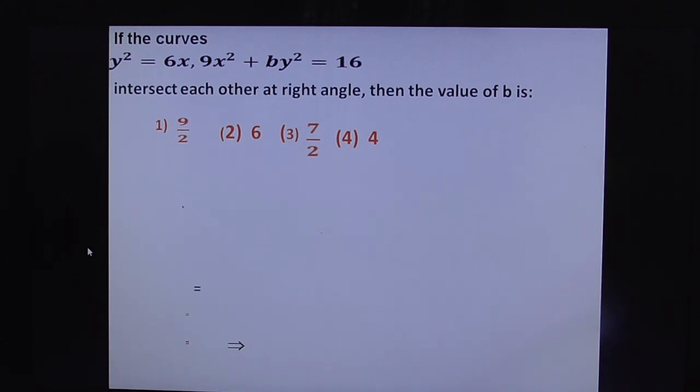Observe the question here. If the curves y² = 6x and 9x² + by² = 16 intersect each other at right angle, then the value of b. So here, apply the right angle concept.